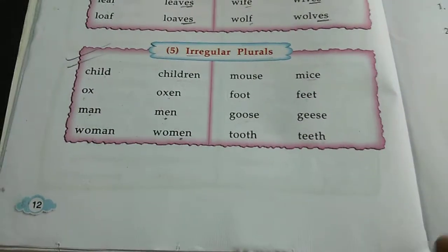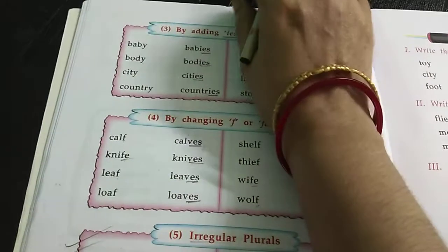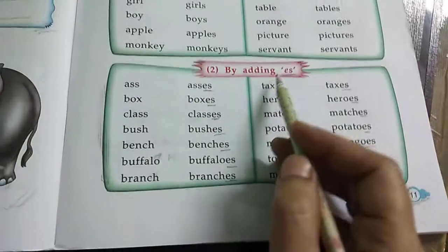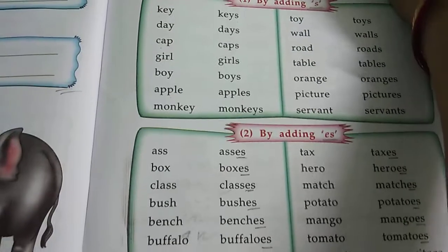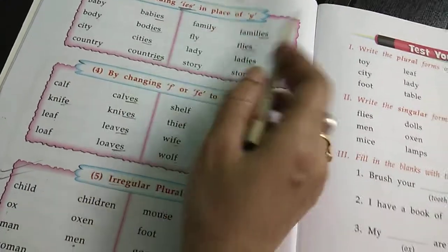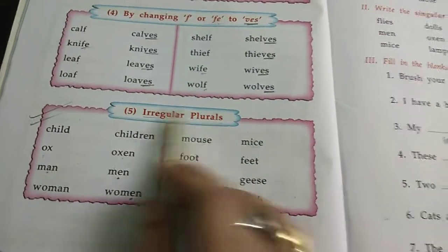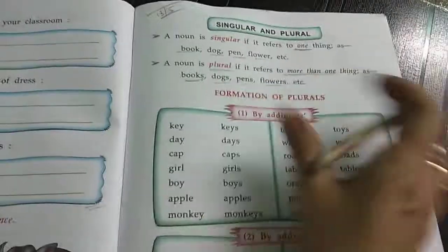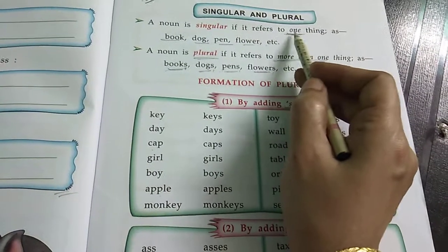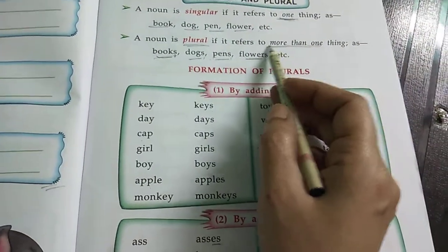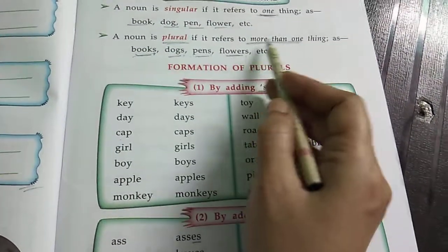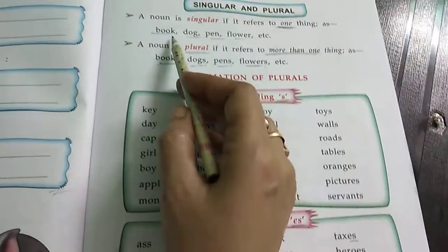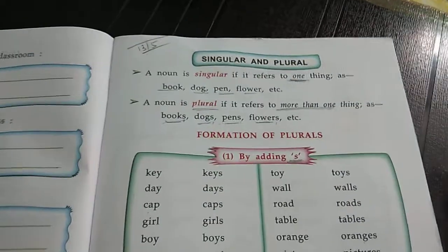This you have to learn. So these are singular and plural — it has many ways to change singular into plural. Here we added only S, here we added ES, here we replaced Y with IES, here we added VES, and here we have irregular plurals which change by themselves. Singular means one — a noun is singular if it refers to only one. Plural means many or more than one. Singular will have no S and plural will have S.